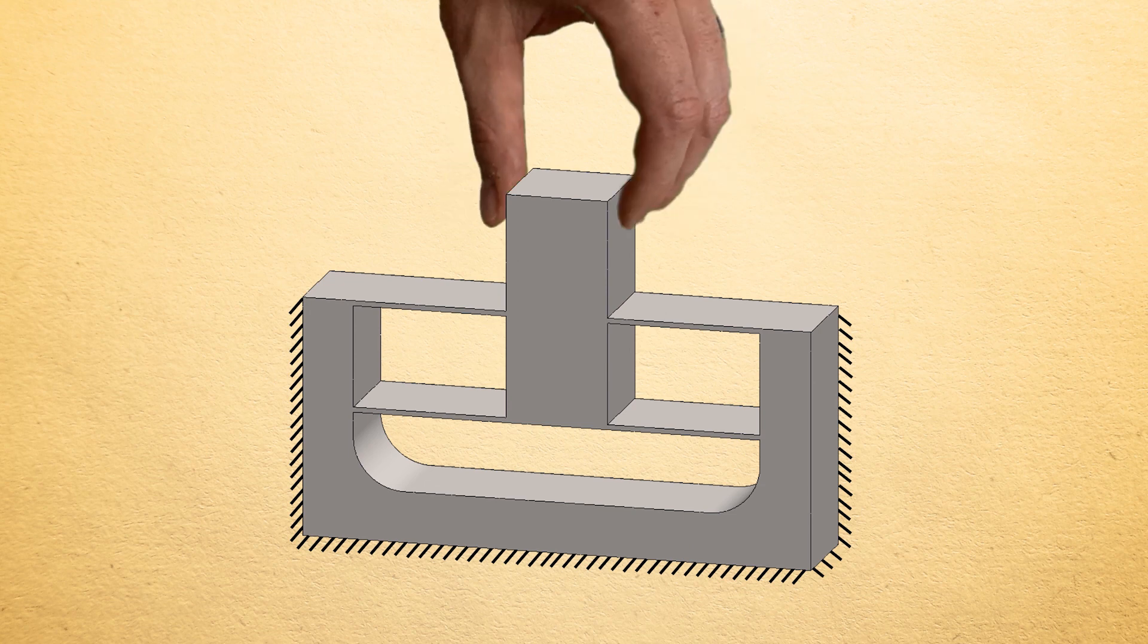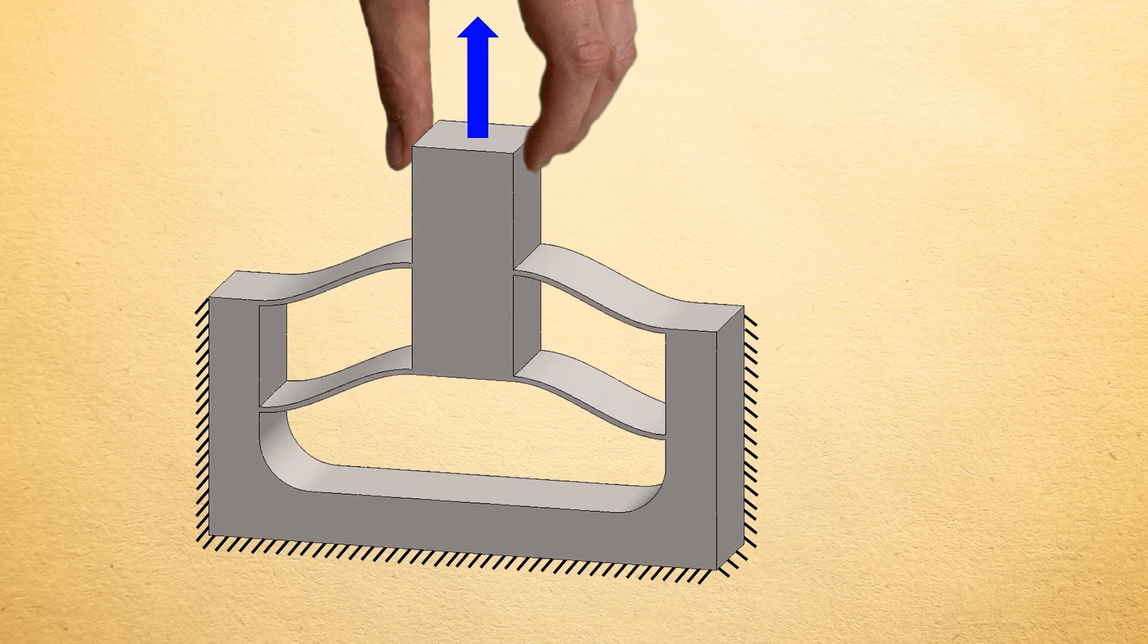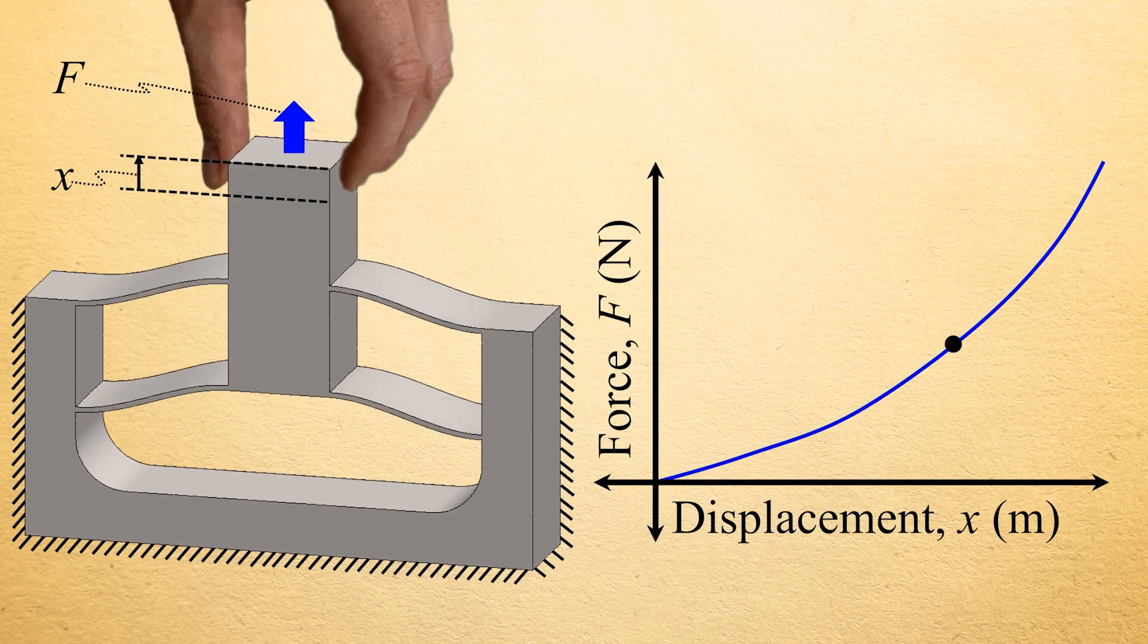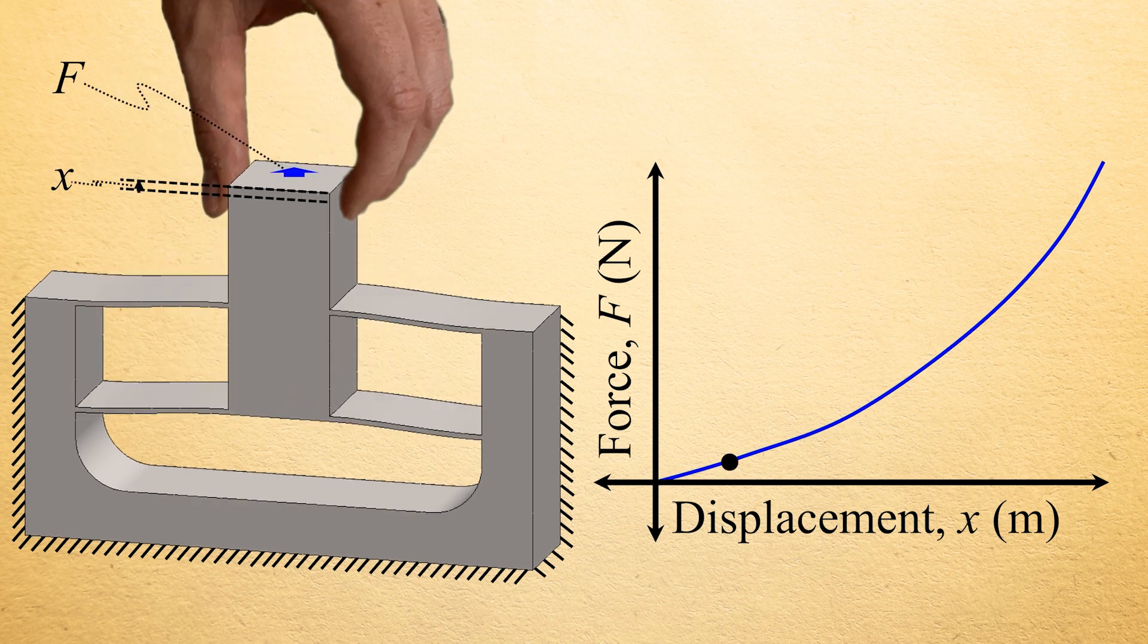Sometimes, the force applied to a body is not constant, but rather continuously changes as the body displaces along its path. This scenario often occurs when a force is applied to deform a spring. You'll recall that the force required to displace a spring typically changes as a function of the spring's displacement according to the spring's force displacement plot.